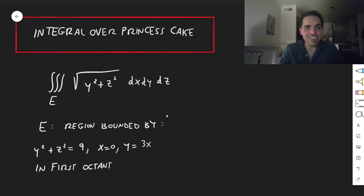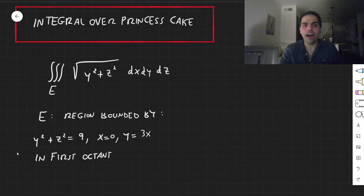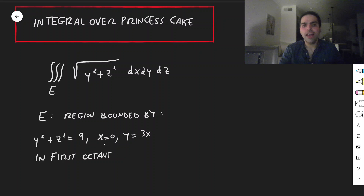In particular, let's calculate the triple integral of square root of y squared plus z squared over the region bounded by y squared plus z squared equals 9, x equals 0, and y equals 3x in the first octant.